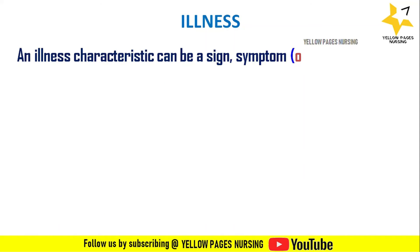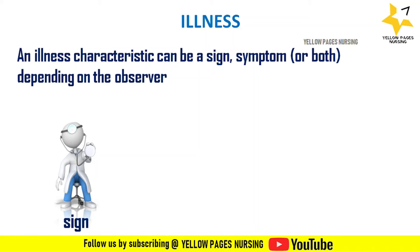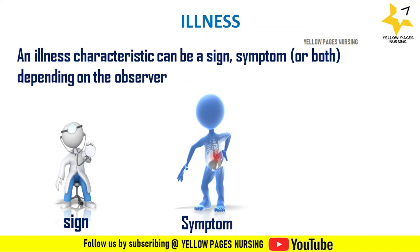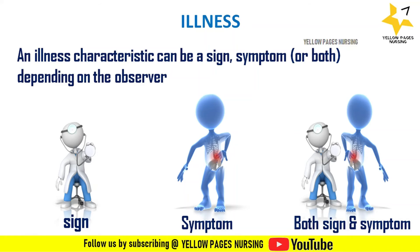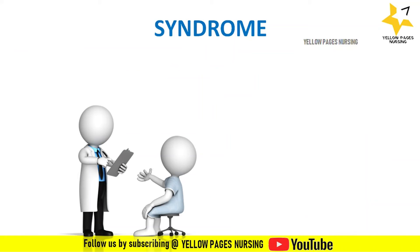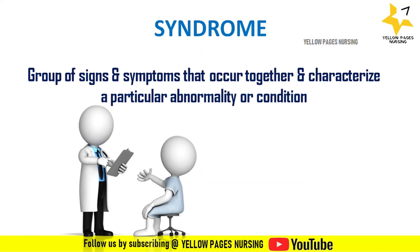Next comes illness — an illness characteristic can be a sign, a symptom, or both, depending on the observer. Next comes syndrome: a group of signs and symptoms that occur together and characterize a particular abnormality or condition is termed a syndrome. Many syndromes are named using a nomenclature based on signs and symptoms or the location of the disease.